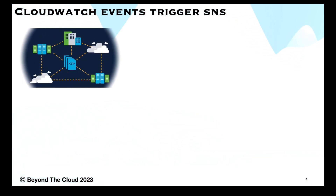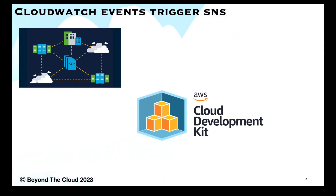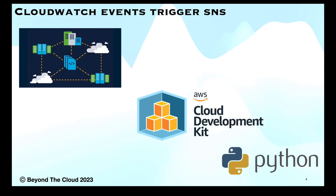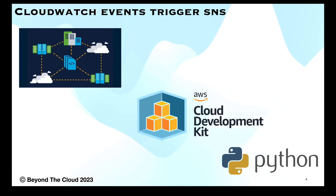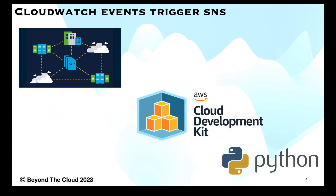We will do everything as infrastructure as code — generating the Lambda, SNS topic, and event rule, all with code. For that, we will use AWS CDK as our infrastructure as code service. You can also use Terraform, which is widely used. If you need this tutorial in Terraform, please write in the comment section and I will make another video. We will use Python as the base language for developing with AWS CDK. Tune in for my next lecture to do some hands-on to generate these resources, deploy, and test them.